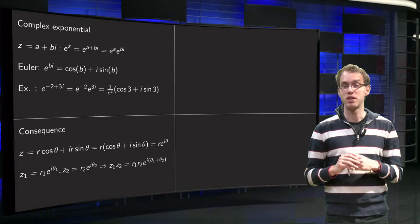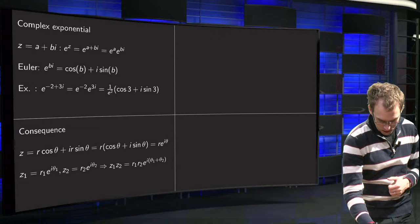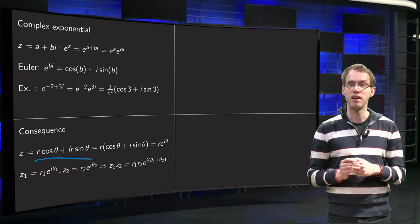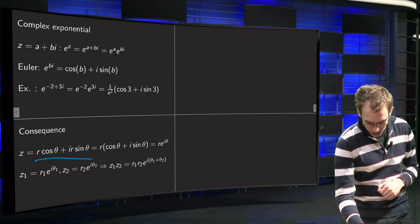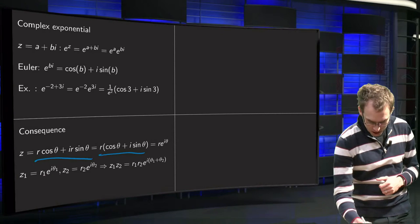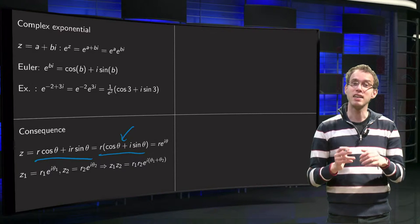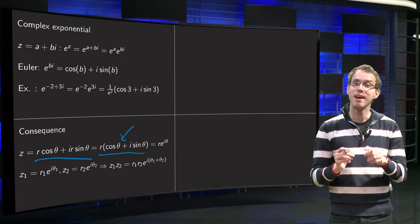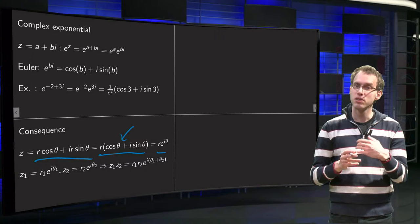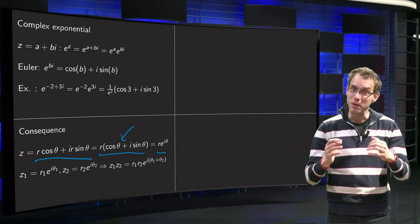This has a nice consequence. Remember the polar form of a complex number z: we wrote z equals r times (cosine θ + i sine θ). Taking out r, the part (cosine θ + i sine θ) is exactly of Euler's form, so we can write it as r times e to the power iθ. This means we can write the polar form of a complex number as a complex exponential.